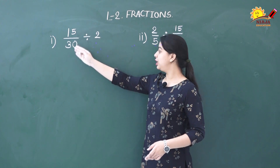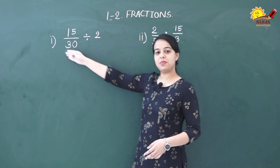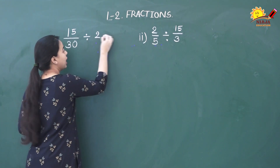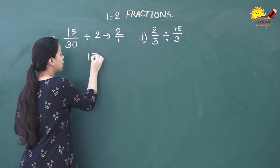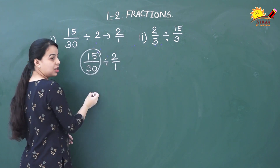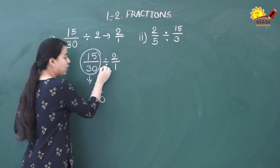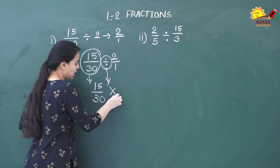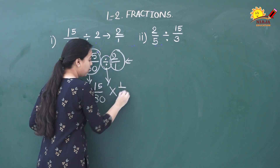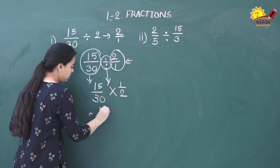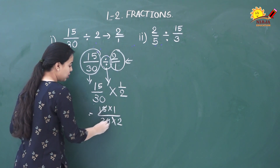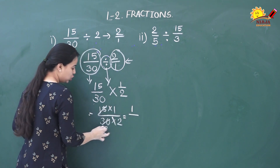Let us see the first example: 15 upon 30 divided by 2. Here one is a fraction and the other is a whole number. We can write 2 as 2 upon 1. So we have 15 upon 30 divided by 2 upon 1. Put the first term as it is: 15 by 30. Change division to multiplication and write the reciprocal of 2 by 1, which is 1 upon 2. Now multiply: 15 × 1 on top and 30 × 2 on the bottom. We can simplify 15 and 30, leaving 1 over 4.